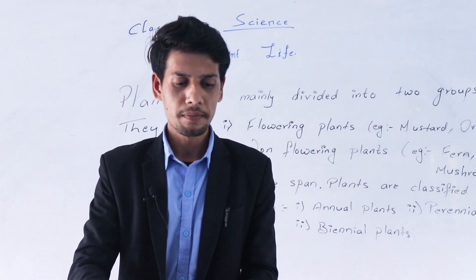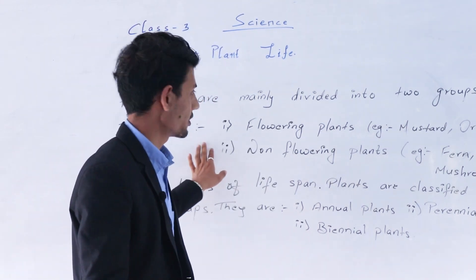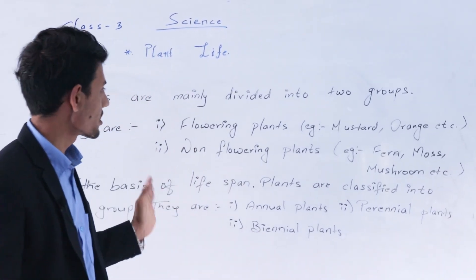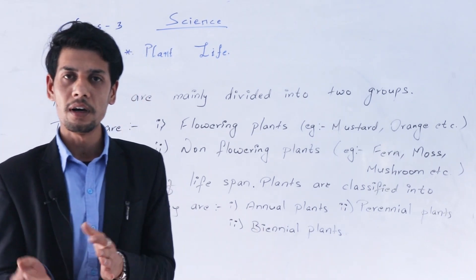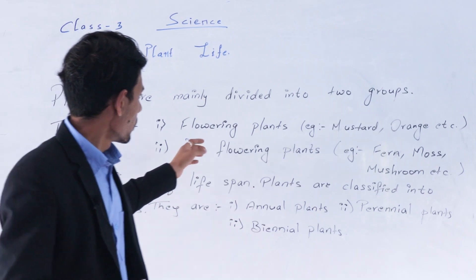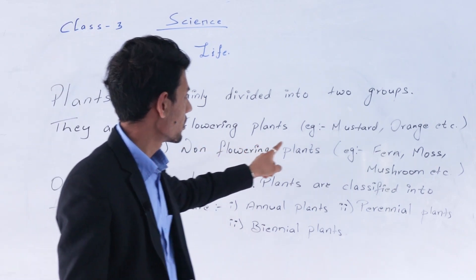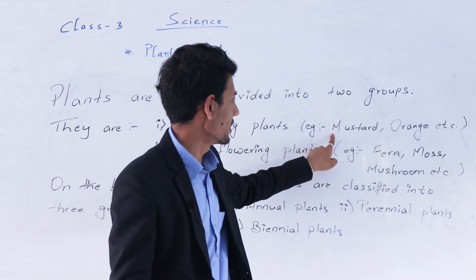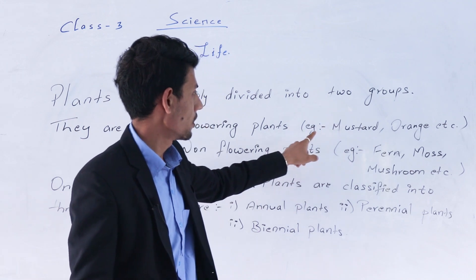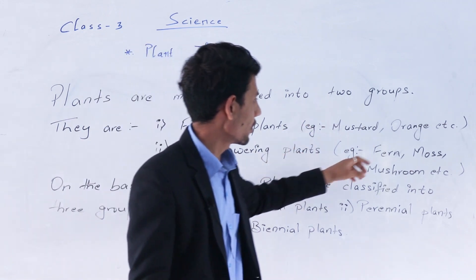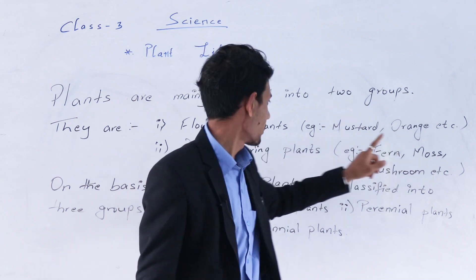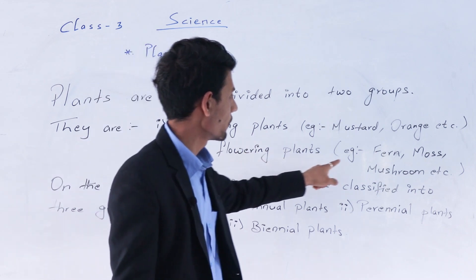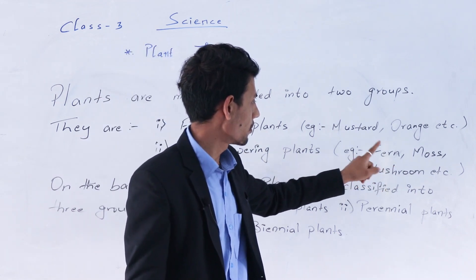These plants are mainly classified as flowering and non-flowering. Now let us discuss examples of each group. Examples of flowering plants are mustard, orange, etc. Likewise, examples of non-flowering plants are fern, moss, mushroom, etc.